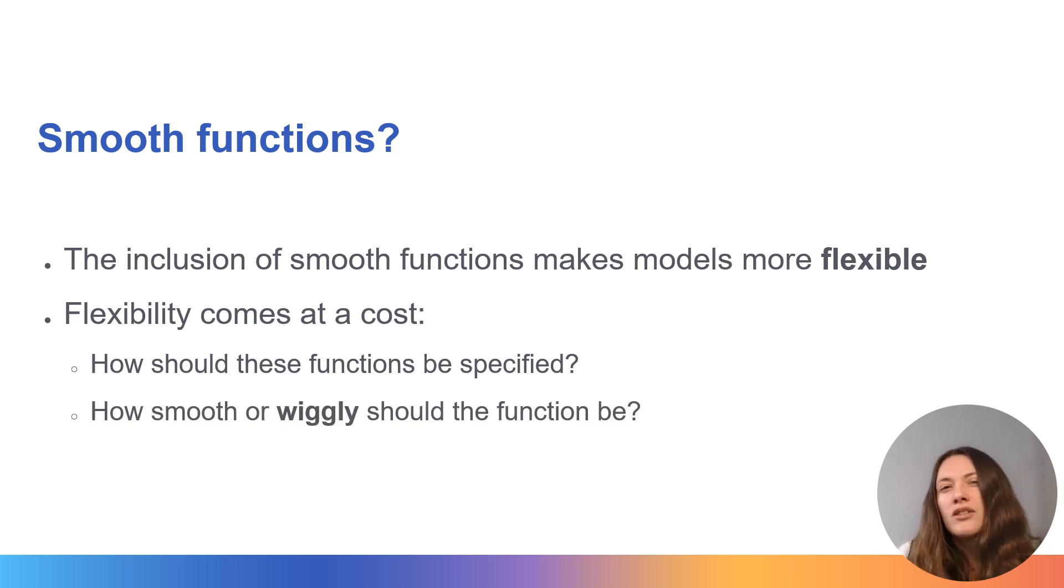We also have to determine how smooth or wiggly these functions must be. It's particularly important to do this because if we have an overly wiggly function, this could lead to us overfitting the data and could really limit the types of inferences that we can make about the population of interest.